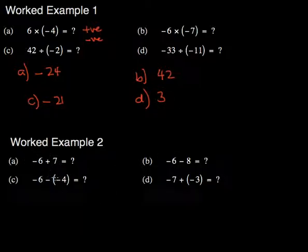For the second part, it's the same sort of thing, but just adding the numbers together. If I have negative 6 and I add 7, that's equivalent to saying 7 minus 6, which is 1.